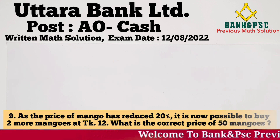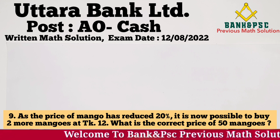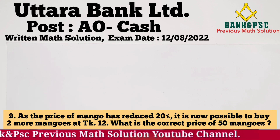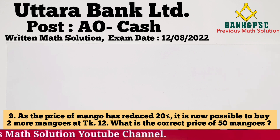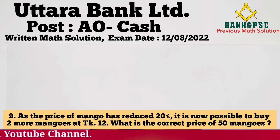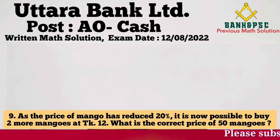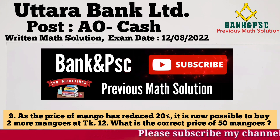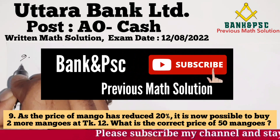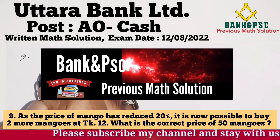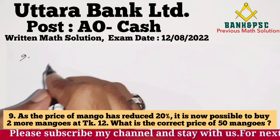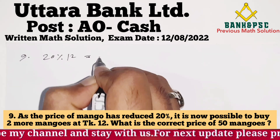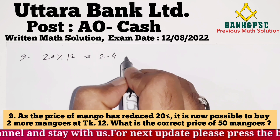Next question: It is possible to buy two more mangoes at 12 taka after a price decrease. What is the price of 50 mangoes? When the price decreased by 20%, the amount saved is 20% of 12 = 2.4 taka.